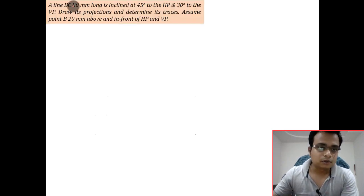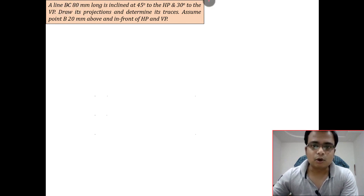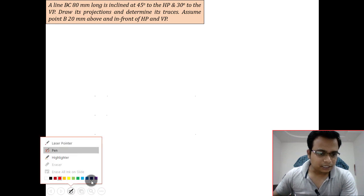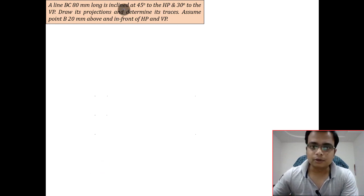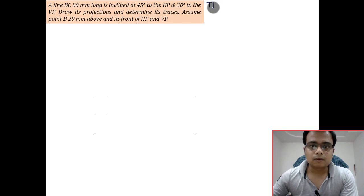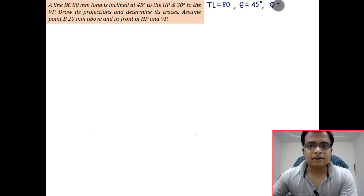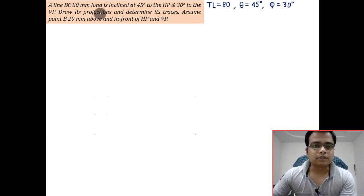This is going to be problem number one. We have a line BC, 80 mm long. Let me write down all the data given to us. We've got the true length of 80 millimeters, then we have its inclination with HP and VP, so theta is 45 degrees and phi is 30 degrees.